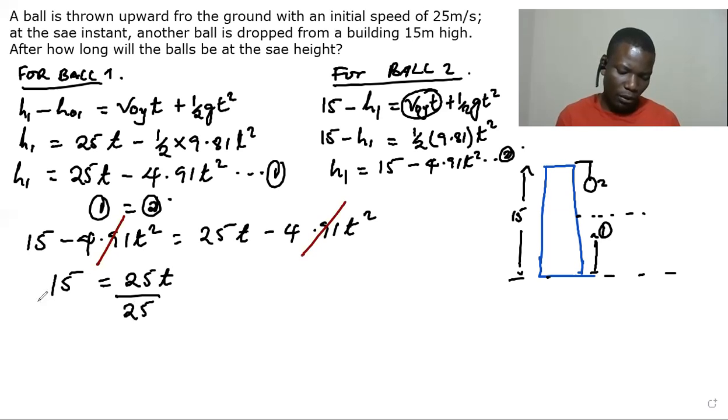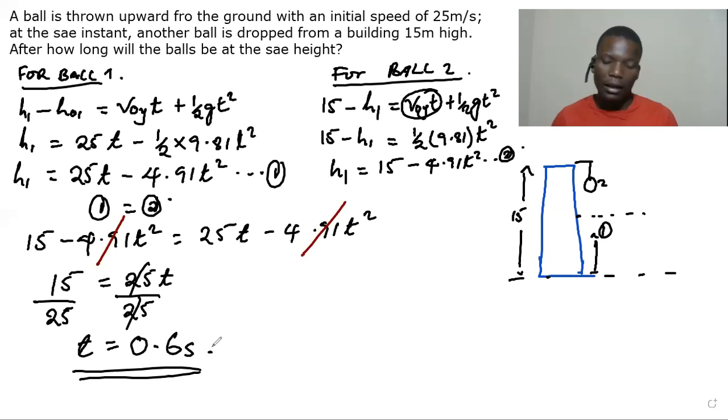So we divide both sides by 25. And then the time at which they are going to be at the same height is going to be 0.6 seconds. So after being thrown and the other one dropped, after 0.6 seconds, they are going to be at the same height. Thank you for watching.